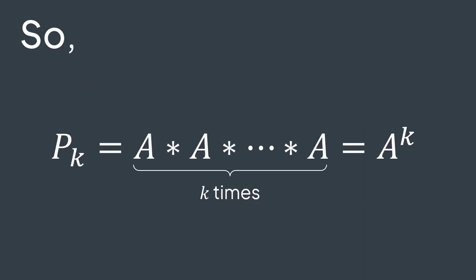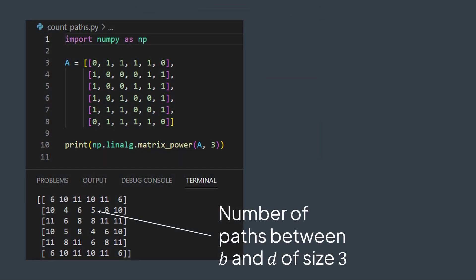If we want to count paths of length k between any pair of vertices, we start from the adjacency matrix, and multiply it by itself k minus 1 times. We get A to the power k, which is Pk. And that's how we can calculate the number of paths of length k, thanks to matrix multiplication. Easily done in Python with the NumPy library, with the matrix power method.